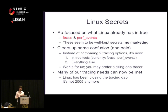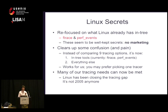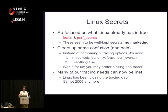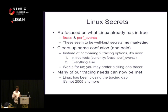Why was I not using ftrace already? I refocused my effort on what Linux already has in the tree — things that are maintained. ftrace and perf events are both part of the Linux source. They seem to be pretty well-kept secrets with no marketing efforts like there have been for DTrace, and absolutely none for ftrace. For me, that really helped clear up confusion and pain. When I do tracing on Linux, I can use ftrace and perf events which are fairly reliable, in-tree, and maintained. When I need to do something more exotic, I can look at SystemTap or KTap.